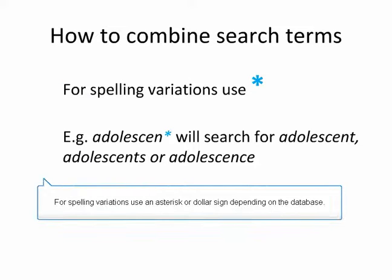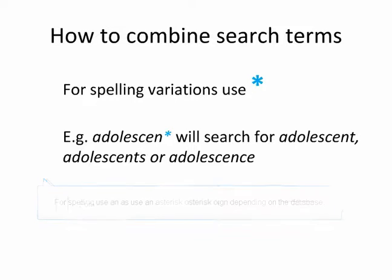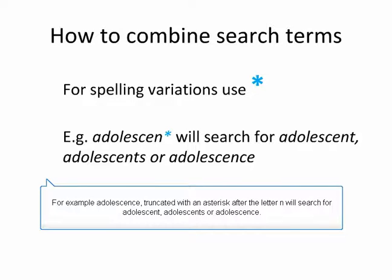For spelling variations, use an asterisk or a dollar sign depending on the database. For example, adolescents truncated with an asterisk after the letter N will search for adolescent, adolescence, or adolescents.